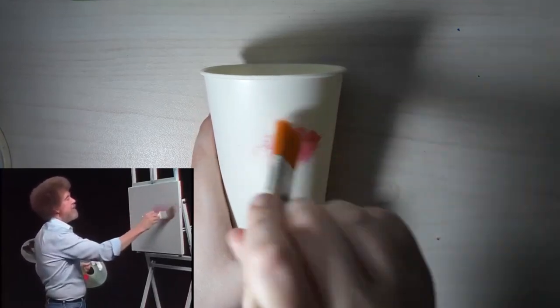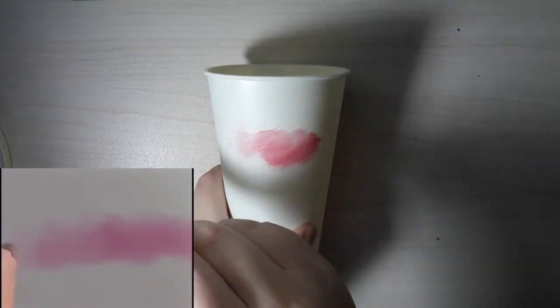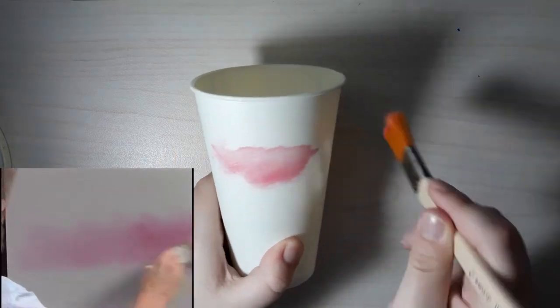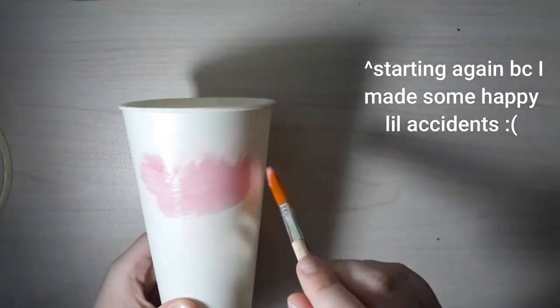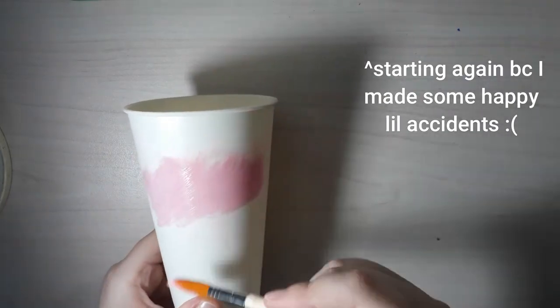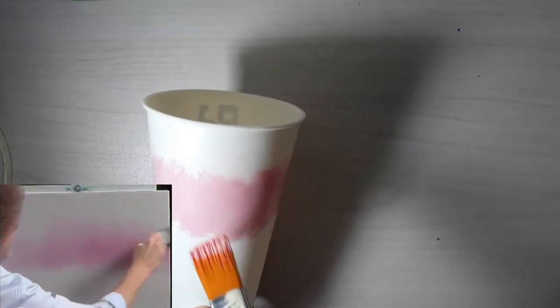And we'll take this old brush, and just making little X's, little crisscross strokes. We'll just very quickly drop in just a little warm part in the sky here. Maybe we'll have a little pink in the sky. I sort of like that.